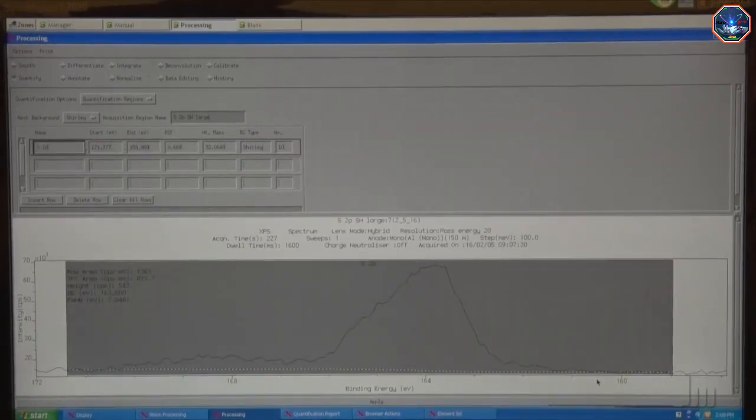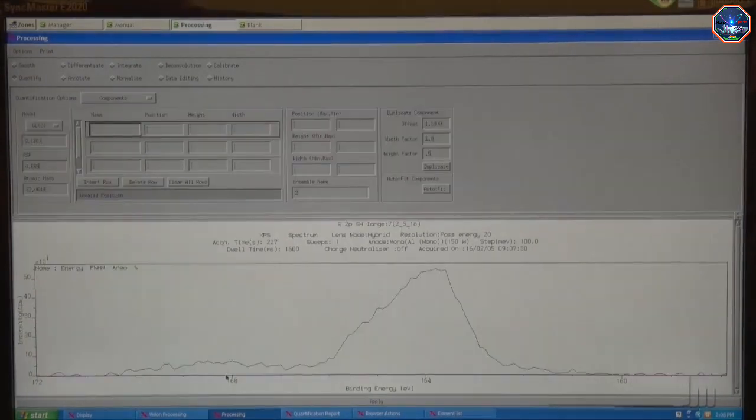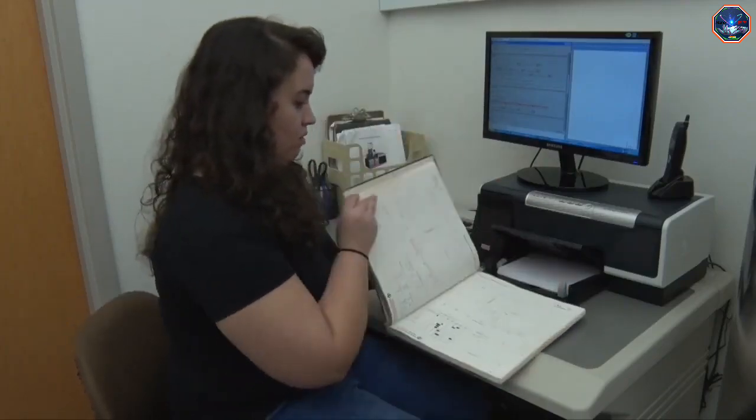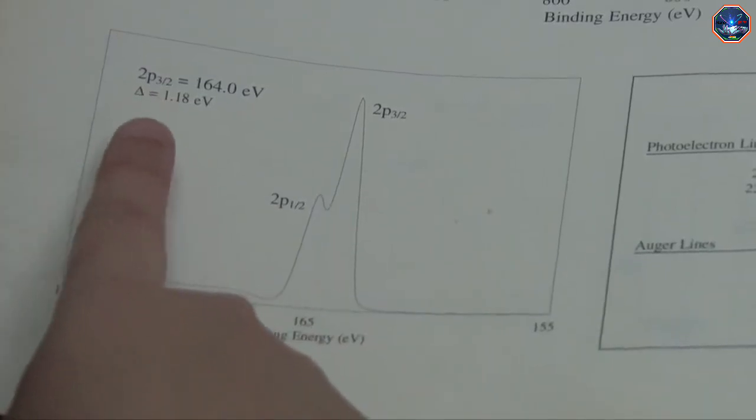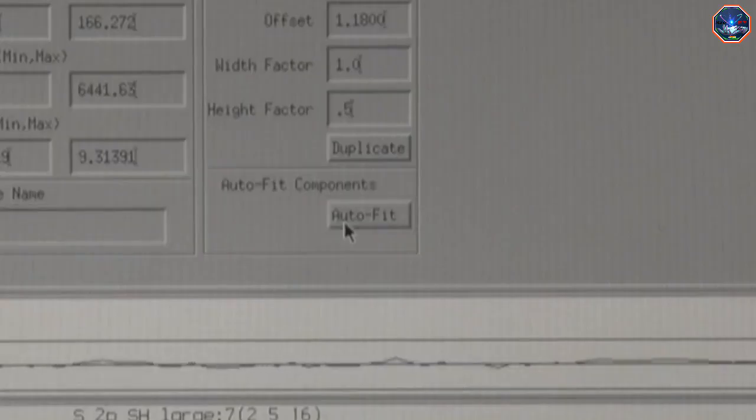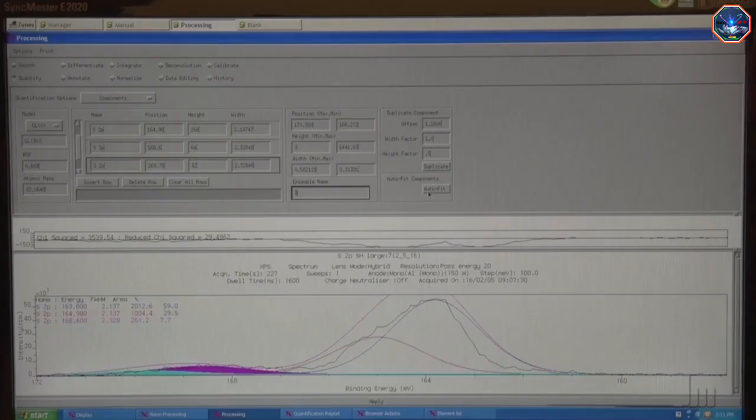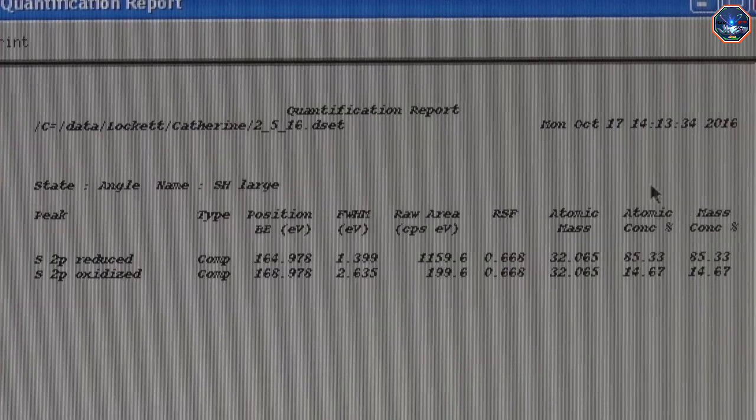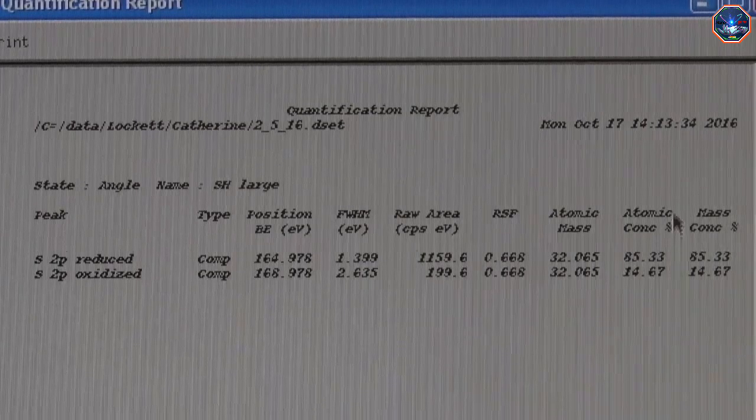The first step is to fit a baseline to the data. Then we can start adding peaks to fit the data. The sulfur 2p line is composed of a doublet, and the spacing between the peaks is published in reference books. The software will allow me to add a new peak with the correct position and relative height to the original peak. Once I've added enough peaks, I can use the auto fit feature to try to obtain the best fit to the data. Finally, I can use this fitted data to determine that 14.6% of my sulfur is in the oxidized form.